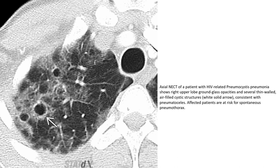On non-enhanced CT, the right side shows patchy ground-glass opacity and several single air-filled cystic structures, consistent with pulmonary pneumatoceles. The patient is at risk for spontaneous pulmonary complications.